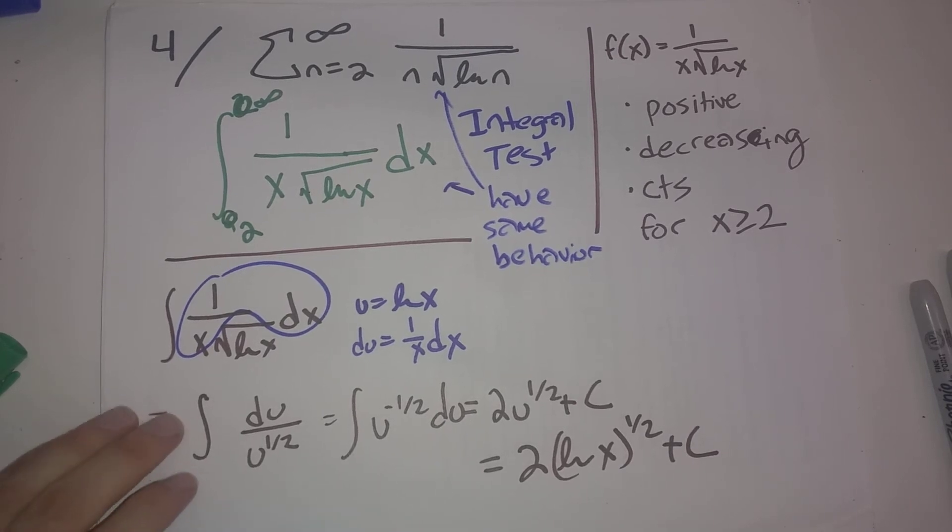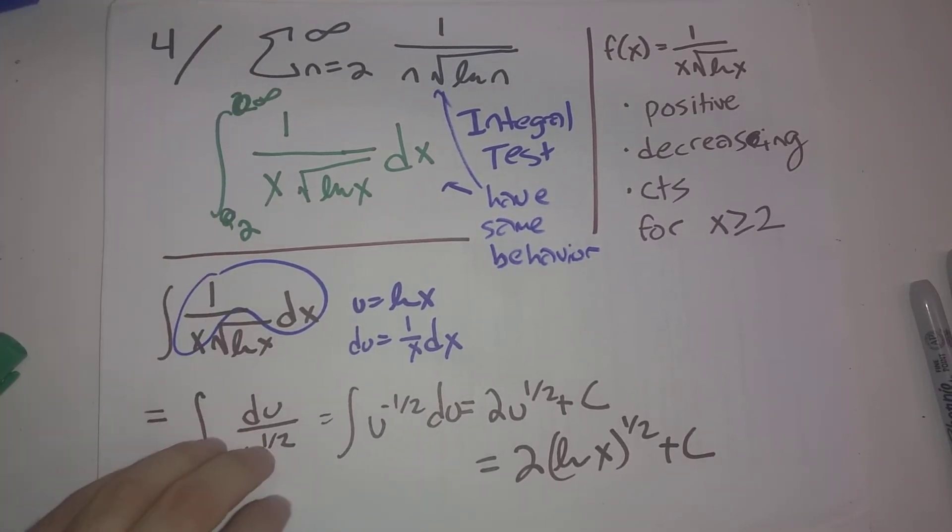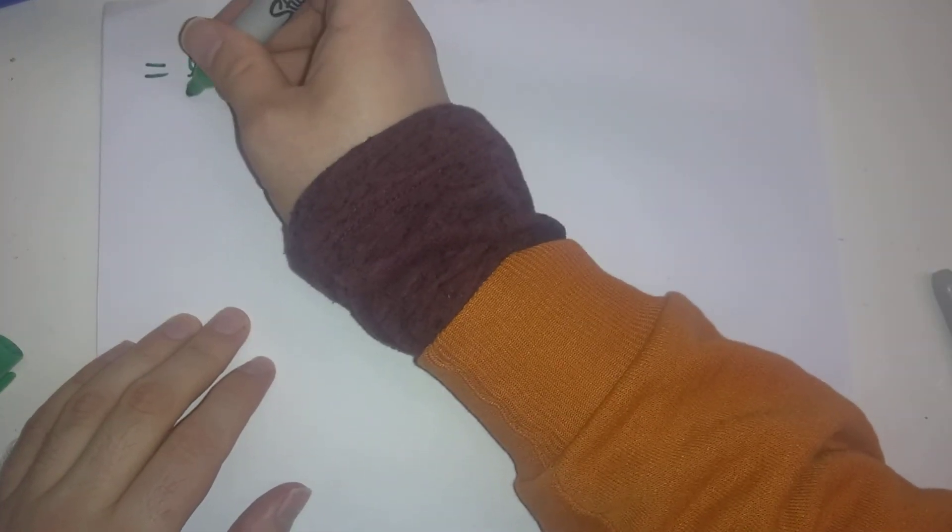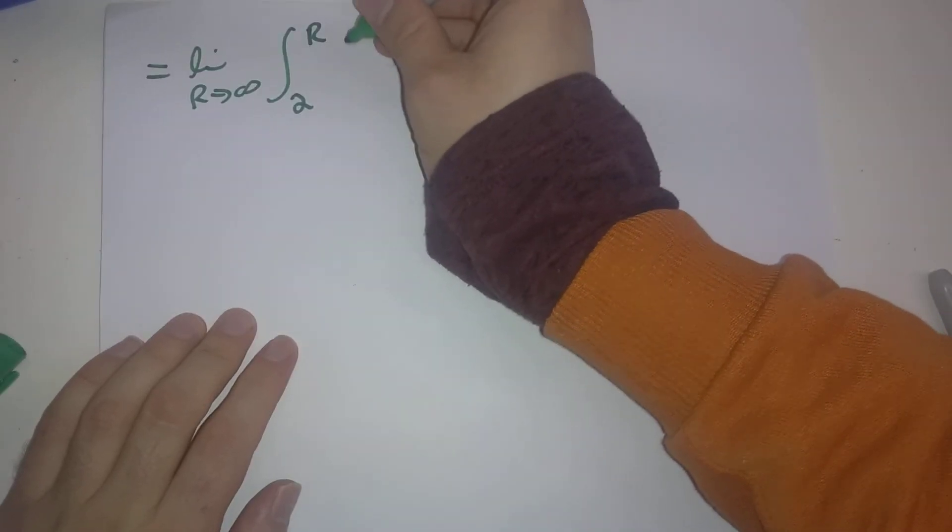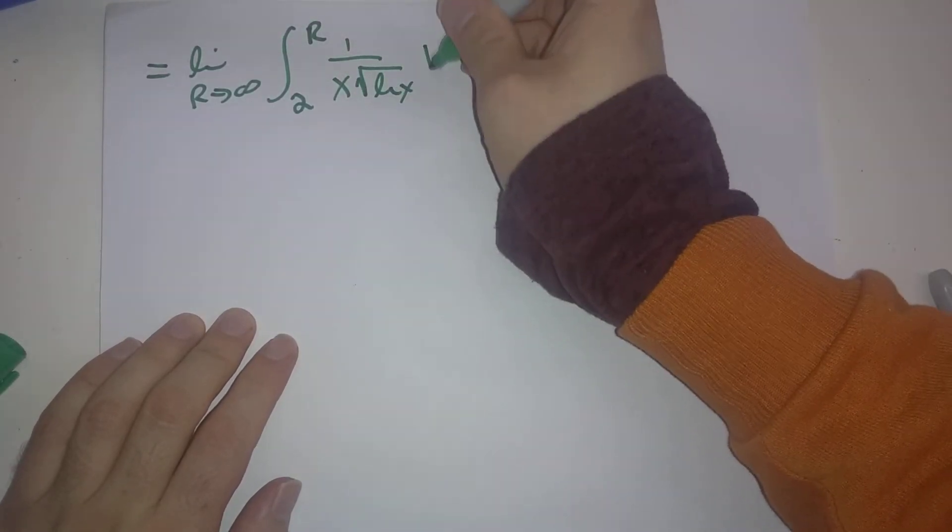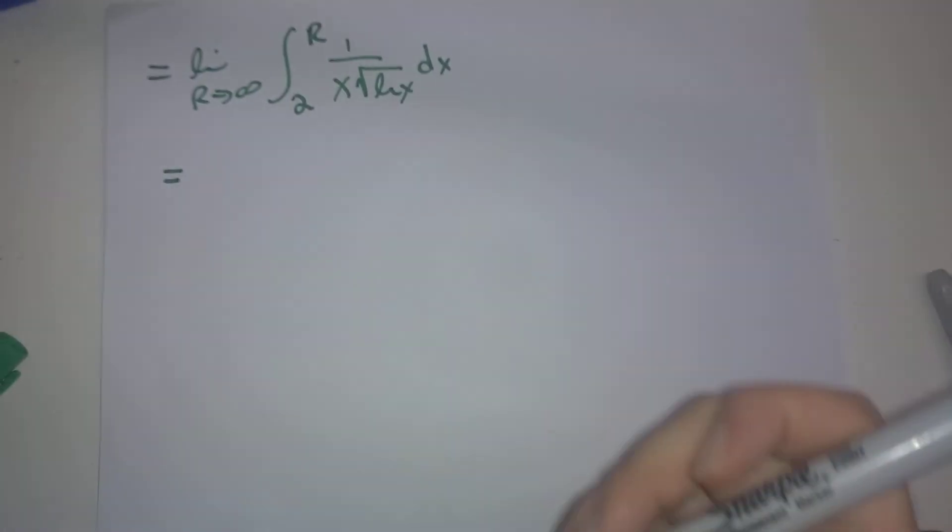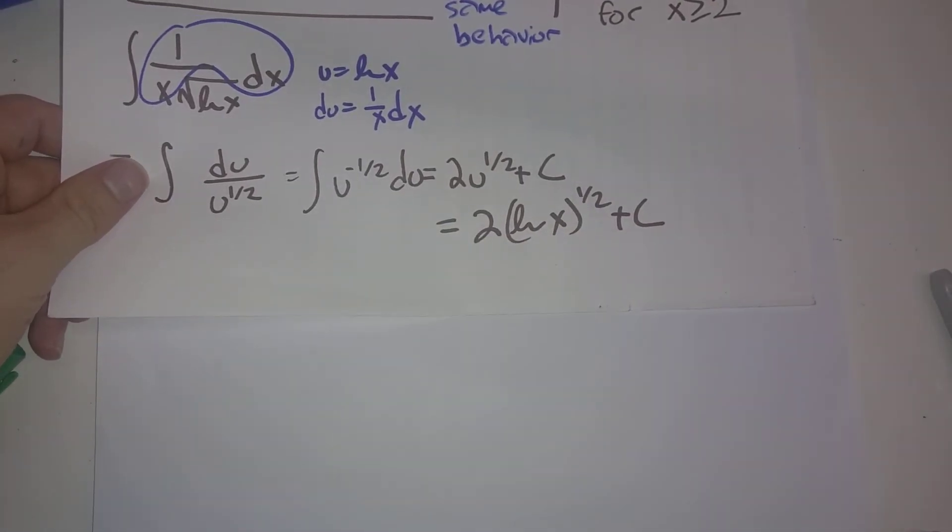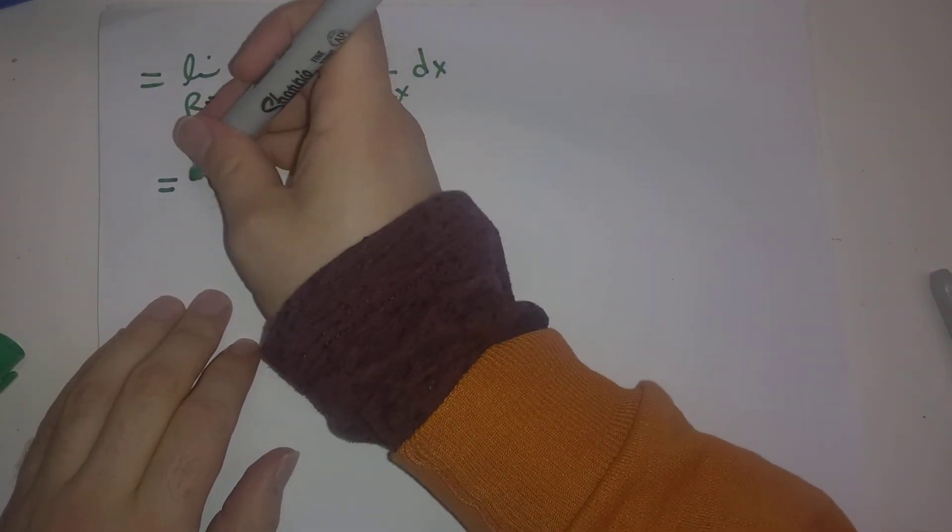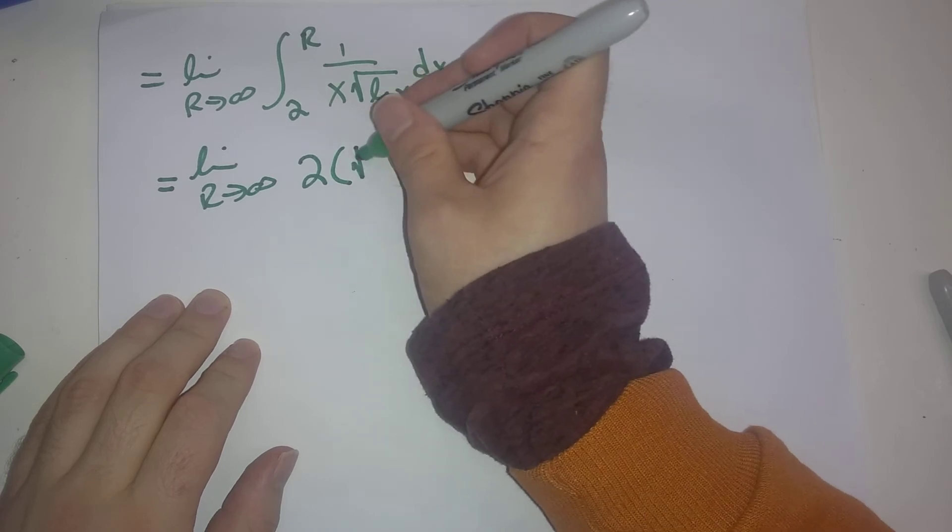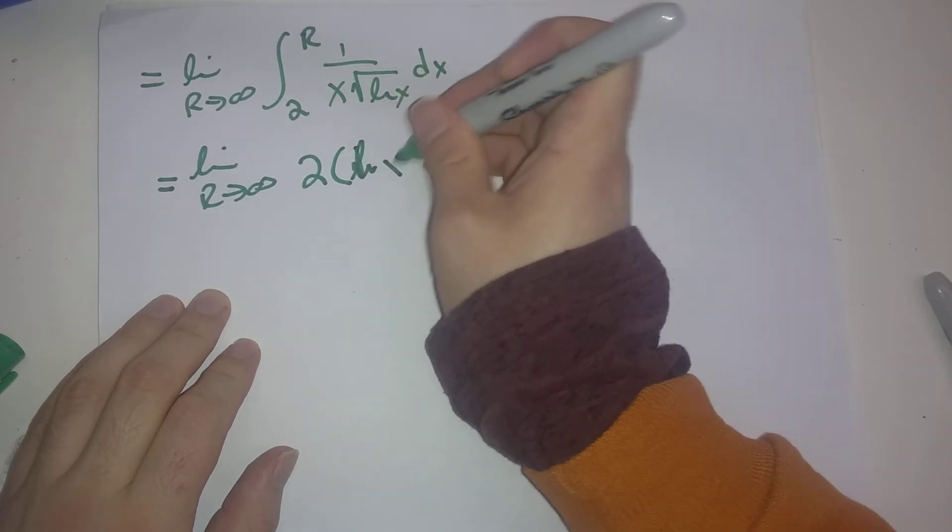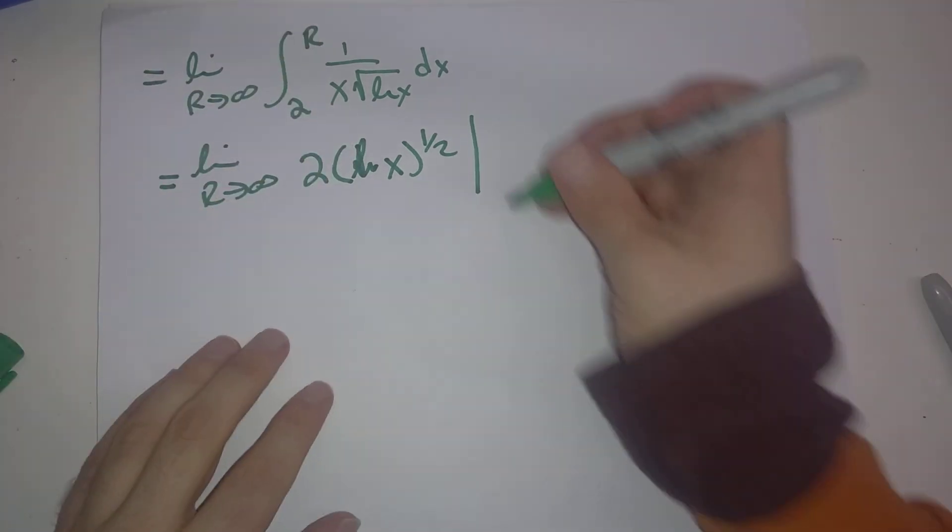So we found the anti-derivative, now let's evaluate the improper integral. This is going to be the limit as r goes to infinity of the integral from 2 to r of 1 over x square root of natural log of x dx. By our anti-derivative that we calculated, it will be 2 times the square root of natural log of x, and we're going to plug in 2 and r.